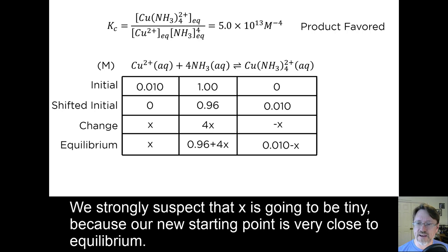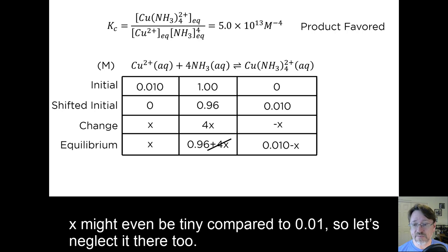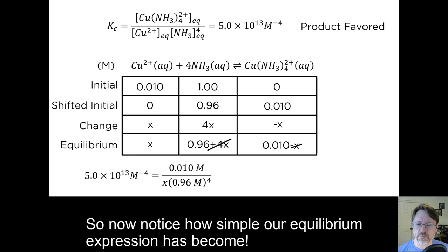We strongly suspect that x is going to be tiny, because our new starting point is very close to equilibrium. So that suggests that 4x is going to be tiny compared to 0.96, so we'll neglect it. X might even be tiny compared to 0.01, so we'll neglect that too. Don't worry, we'll check those assumptions in a moment to verify that they are reasonable. So notice how simple our equilibrium expression has now become.